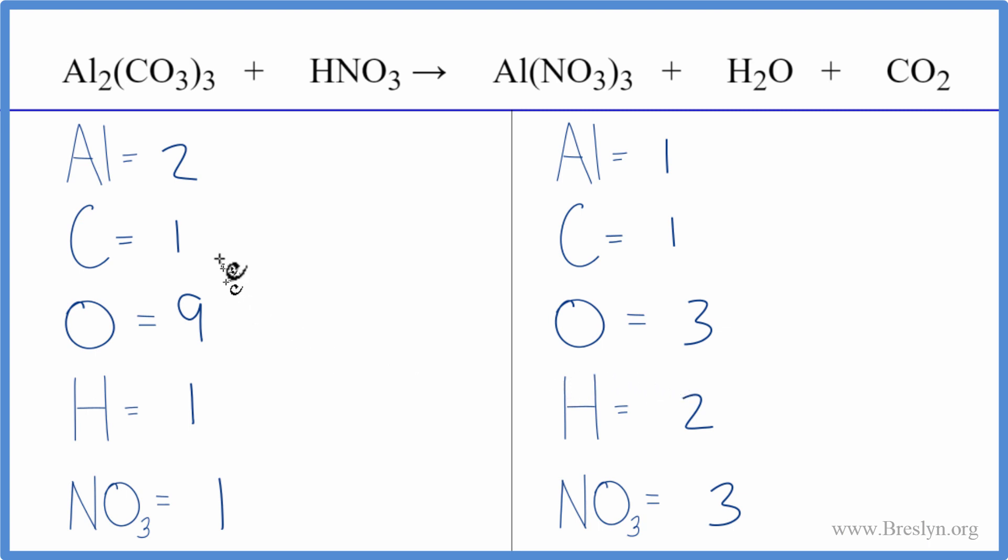So we can first fix the aluminums. That's pretty easy. I'll put a two in front of the aluminum nitrate. One times two. That'll give me two. And then for the nitrates, I have three of them times two. I have six nitrates.